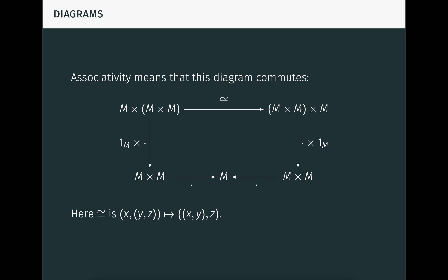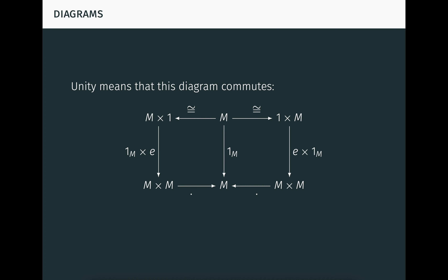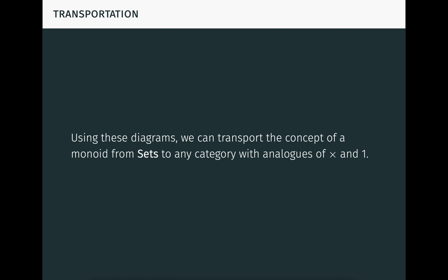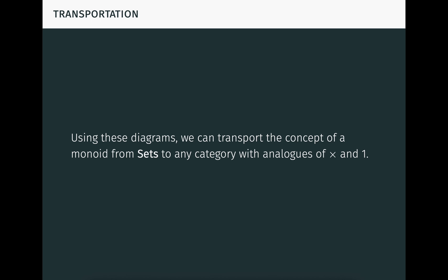Translating between equations and diagrams is a very useful skill to develop when doing category theory. Similarly, unity means that this diagram commutes. The natural isomorphisms on top just pair an element of M with the element in the singleton. Again, you should confirm this equation is equivalent to the unit equation for a monoid. Now, it might seem like we're just making simple things complicated with these diagrams, but they're actually useful. Using these diagrams, we can transport the concept of a monoid from the category of sets to any category with analogs of the Cartesian product and a singleton.